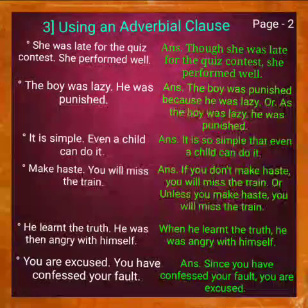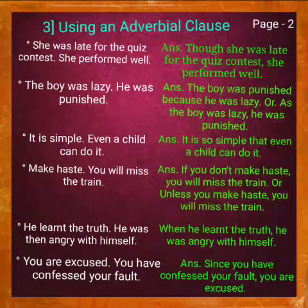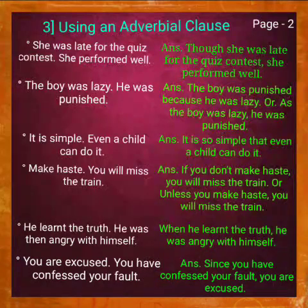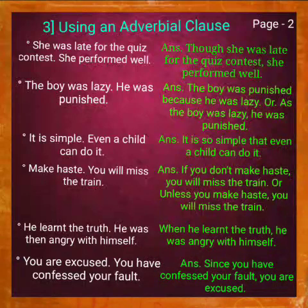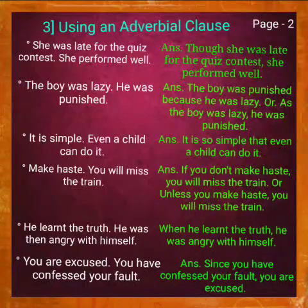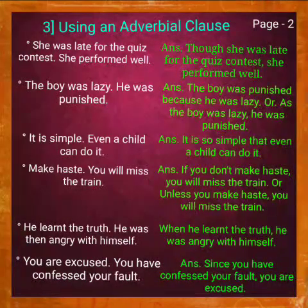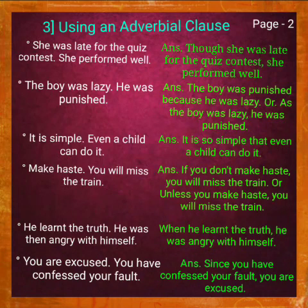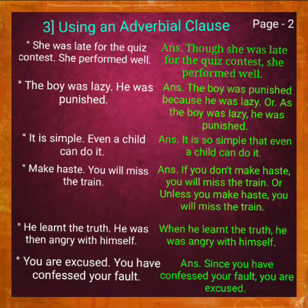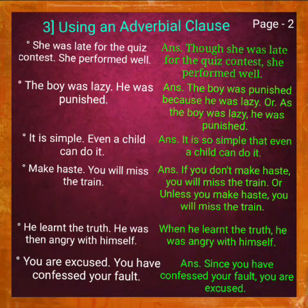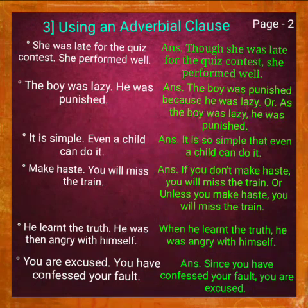Next example — 'The boy was lazy' and 'He was punished.' If I join them into a complex sentence using an adverbial clause, the answer will be: 'The boy was punished because he was lazy.' Or: 'As the boy was lazy, he was punished.' Both are correct and both are complex sentences. In the first answer, 'the boy was punished' is the independent clause and 'because he was lazy' is the adverbial clause. In the second answer, 'as the boy was lazy' is the adverbial clause and 'he was punished' is the independent clause.